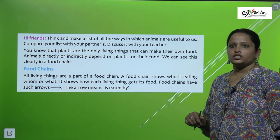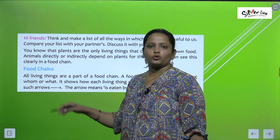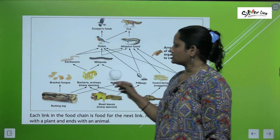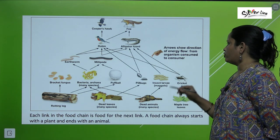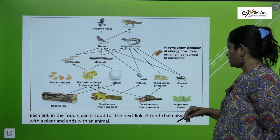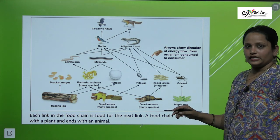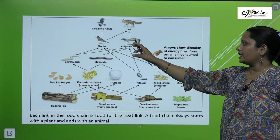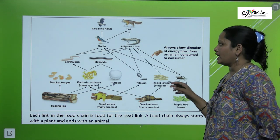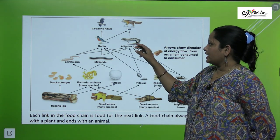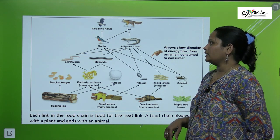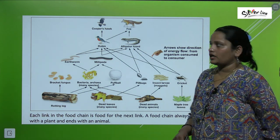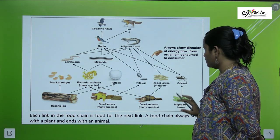Food chains have arrows. The arrow means 'is eaten by' and shows the direction of energy flow from organism consumed to consumer. For example, here you can see a food chain starting with maple tree leaves. The leaves are eaten by a cricket. The cricket is eaten by an alligator lizard or a robin bird. The alligator lizard is eaten by a fox, and the robin is eaten by a Cooper's hawk.